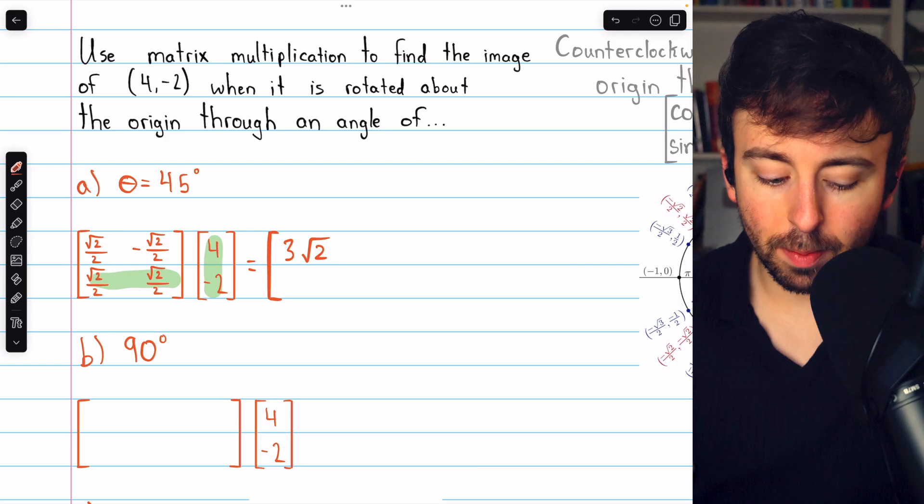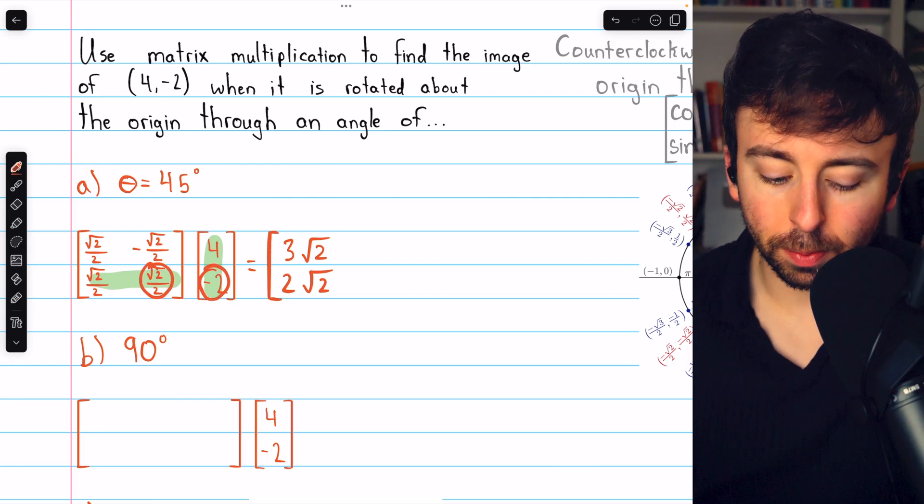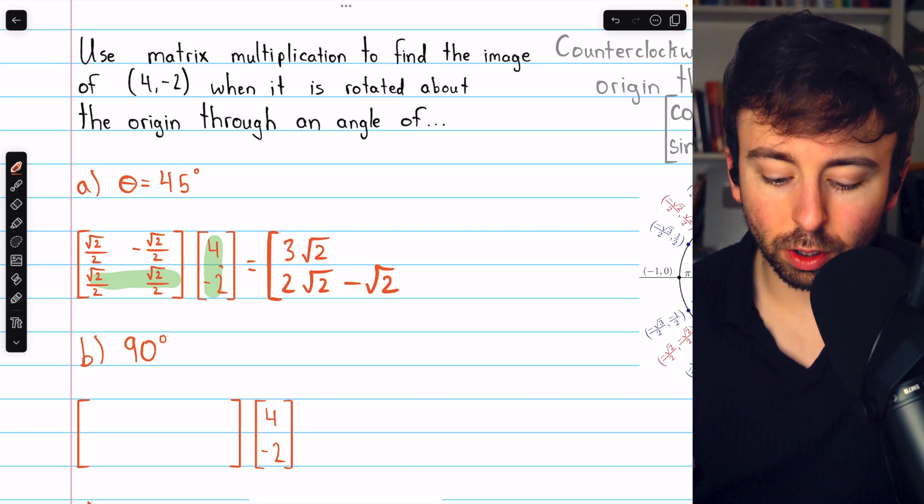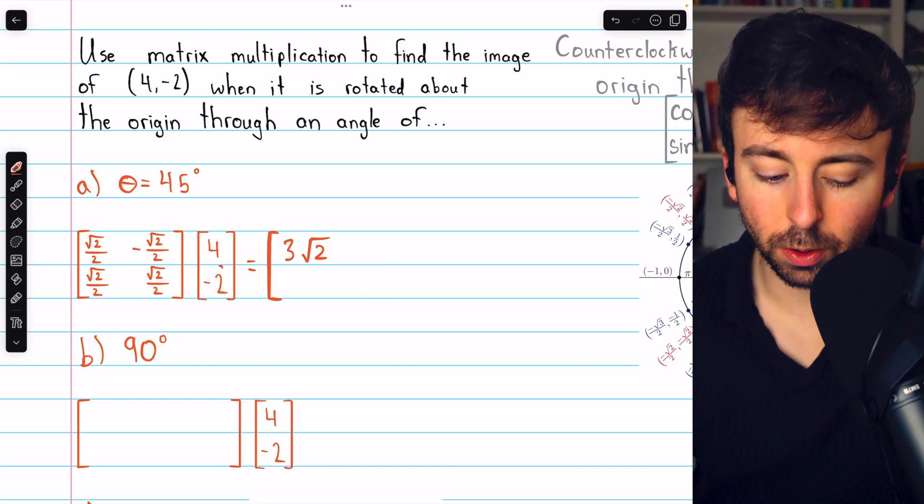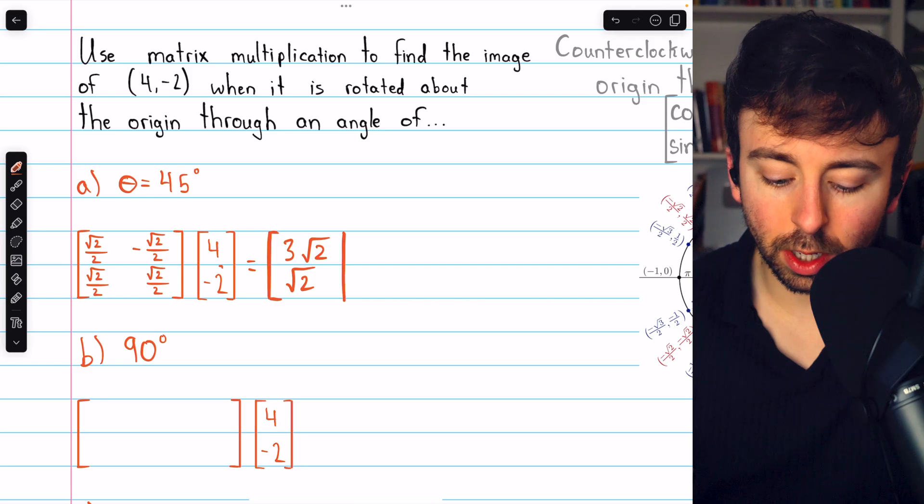Then the second row gets matched up with the first column, and that's going to be the same as what we just had, except the second √2 is going to be negative, because √2/2 multiplied by negative 2 is negative √2. We can simplify that: 2√2 minus √2 is just √2. So the transformation is (3√2, √2).